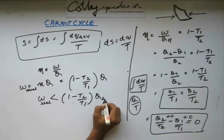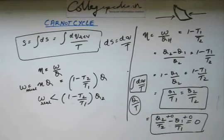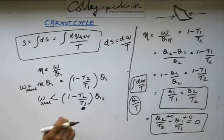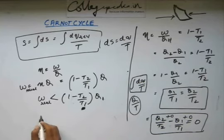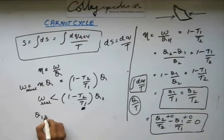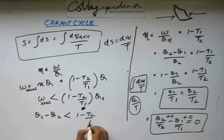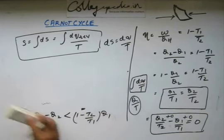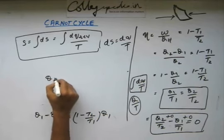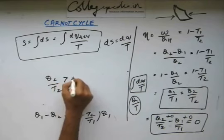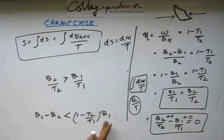Let me name the heat input as Q1 (coming from the higher temperature T1) and heat output as Q2 (rejected to the lower temperature T2). The work done is Q1 minus Q2, and this must be less than (1 - T2/T1) × Q1. If you rearrange this inequality by multiplying through by Q1 and canceling, you will arrive at the key result relating Q1, Q2, T1, and T2.